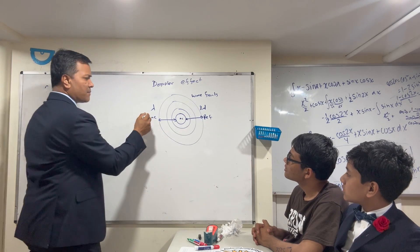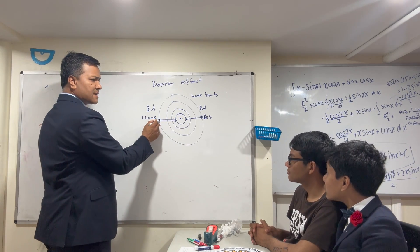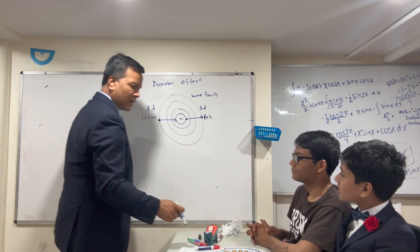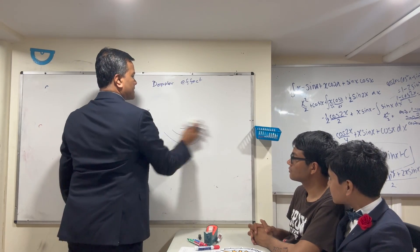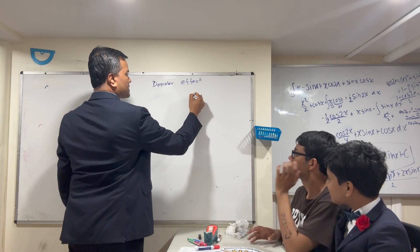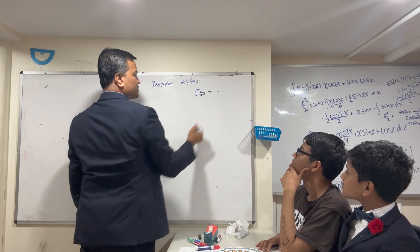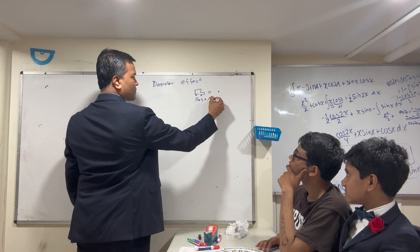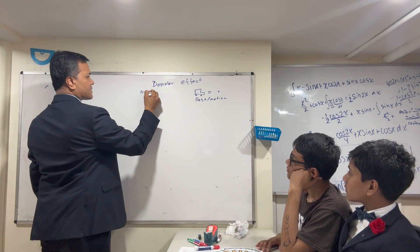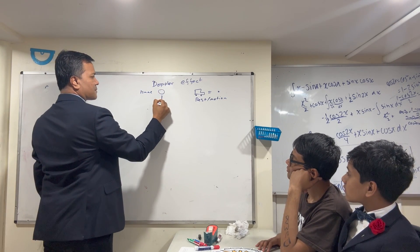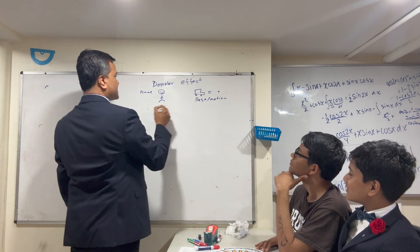Three lambda — the distance from here to here is the same as from here to here. Now we're going to make things a little more complicated. Let's say the source is now moving. We'll represent the car by a dot. The car can be either at rest or in motion, and this is Isaac and this is Raf.